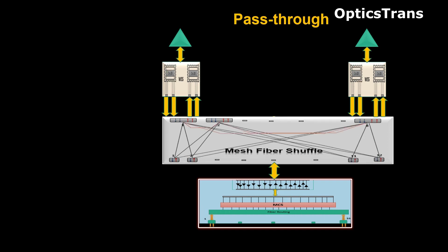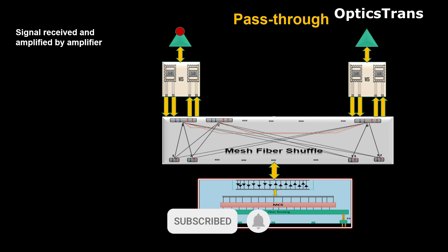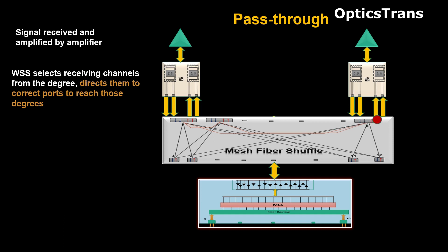In the mesh configuration, to pass through the signal between degrees, the signal is received at the amplifier, and then the WSS selects channels and sends them to the fiber shuffle. The fiber shuffle, using internal connectivity, directs them to the correct ports to reach those degrees, and from the WSS of that degree, the signal is transmitted.